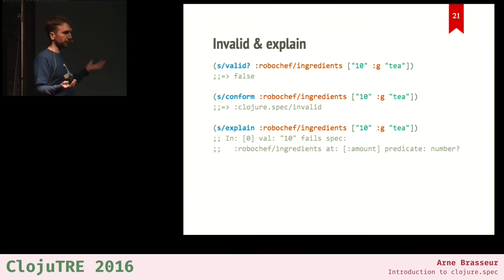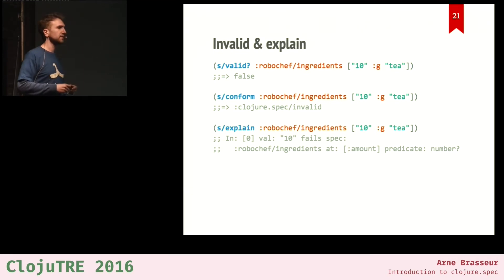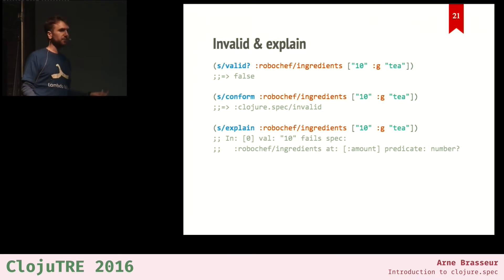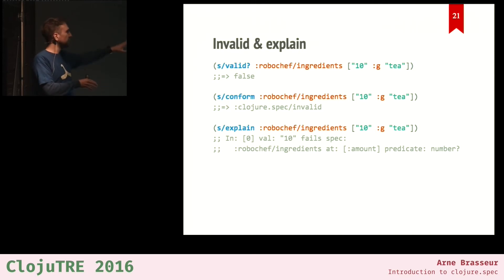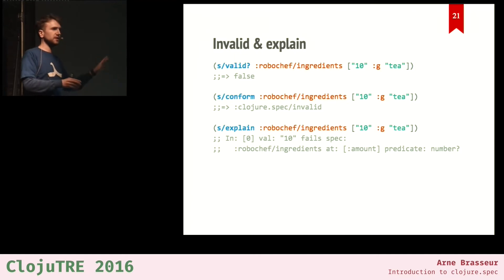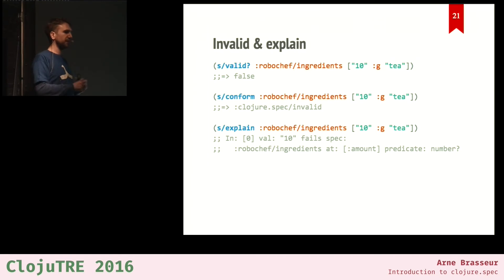If the data doesn't conform — if it's not valid — s/valid? will return false, and s/conform will return the special symbol ::s/invalid. Then you can use the explain function, which prints to standard out an error message telling you exactly which part of your data violated which part of the spec. The output format has become pluggable, so I expect libraries will come out with different ways to display this information.